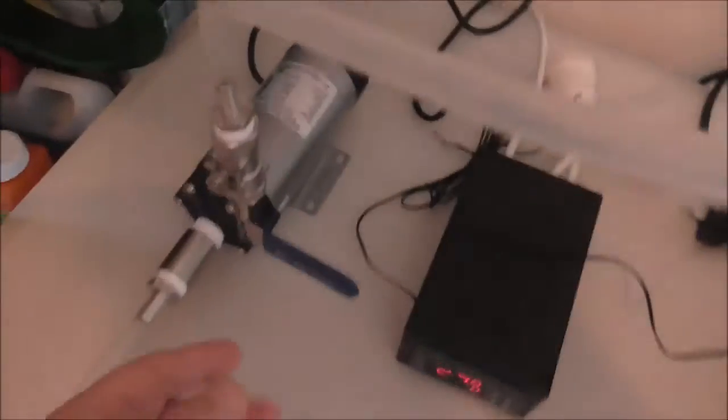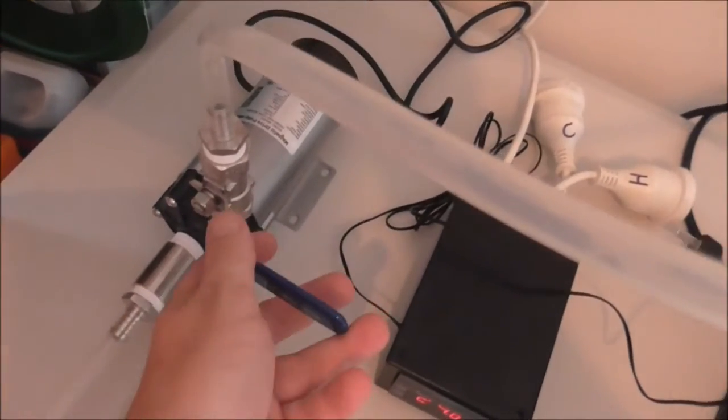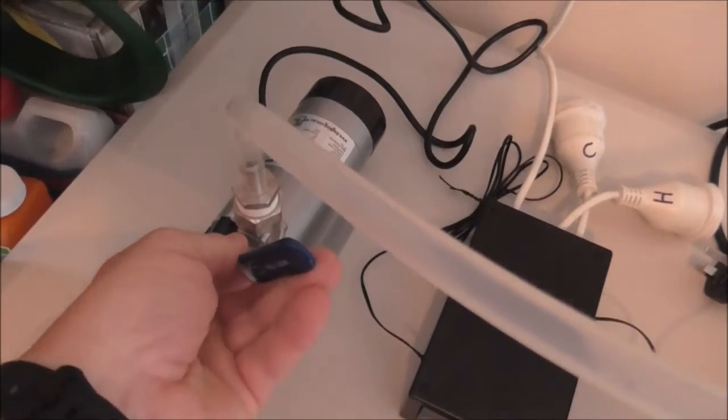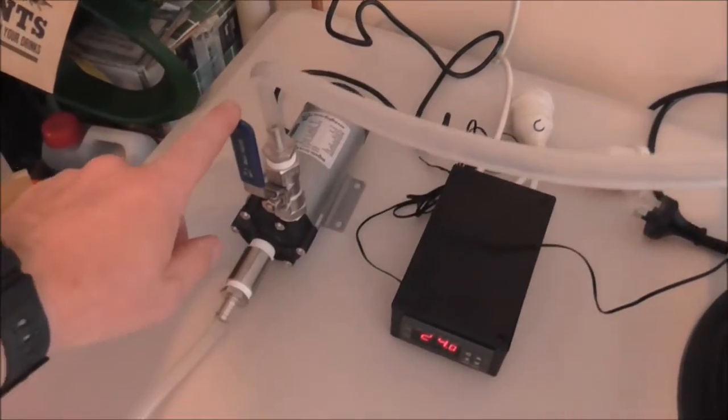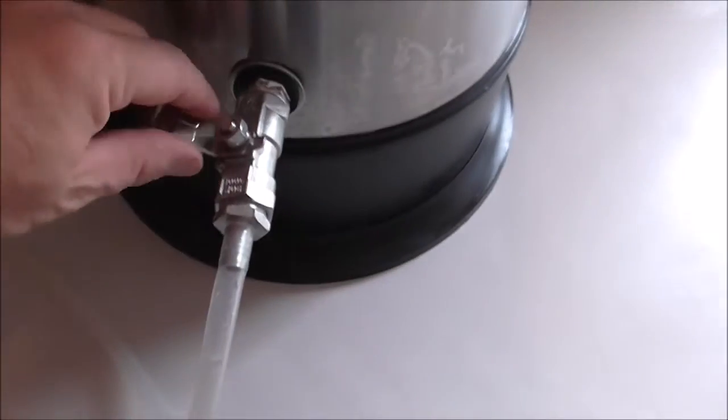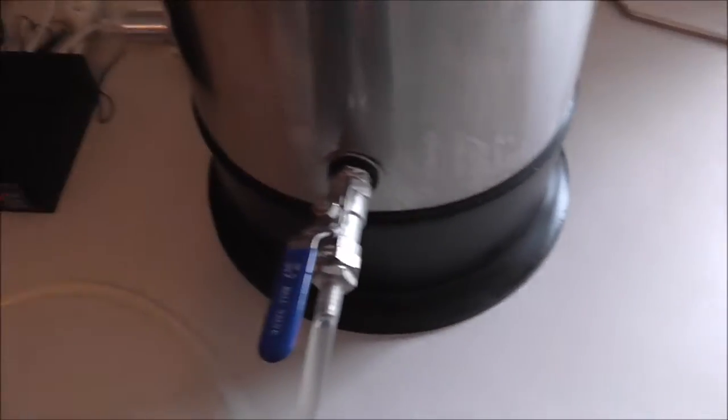But anyway, let's fire up the pump. So it's all hooked up. The first thing I need to do is open up the ball valve on the outside of the pump. And this is also going to be used to throttle back the flow going into the sparge ring. So that's open.